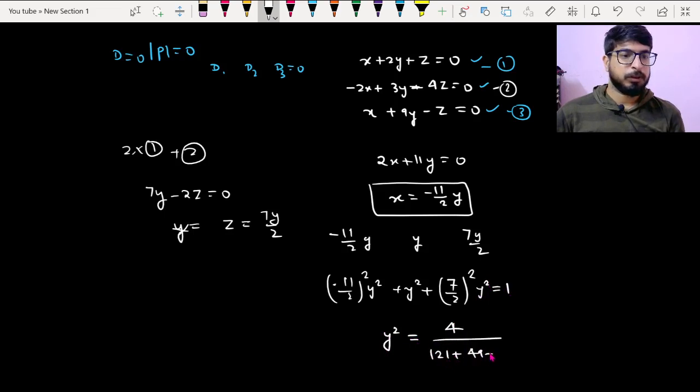121 plus 49 plus 4, that is y squared times 174 over 4. So that gives 4 upon 171. I'll get two values of y: 2 upon root 171 and minus 2 upon root 171.